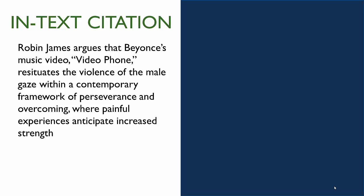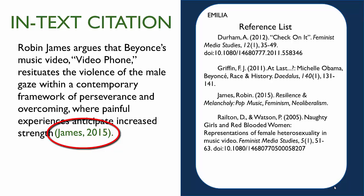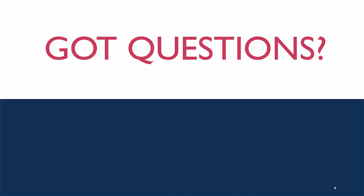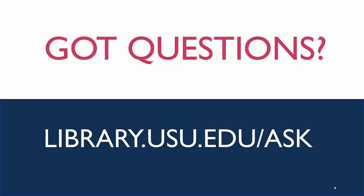Whenever you use other people's ideas and words, you need a brief in-text citation to give the reader a quick glance at who is being referenced. Then you need to include a full citation at the end of the paper in a reference or works cited list. If you have questions about how to incorporate someone else's ideas into your writing, you can ask your instructor or ask a librarian.